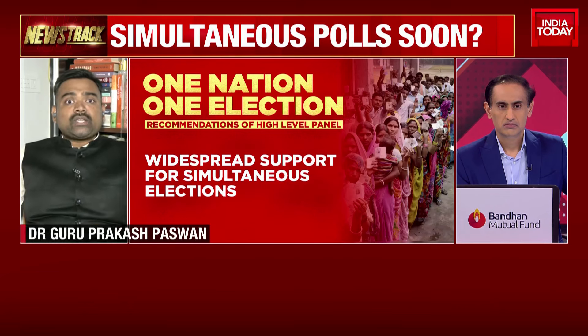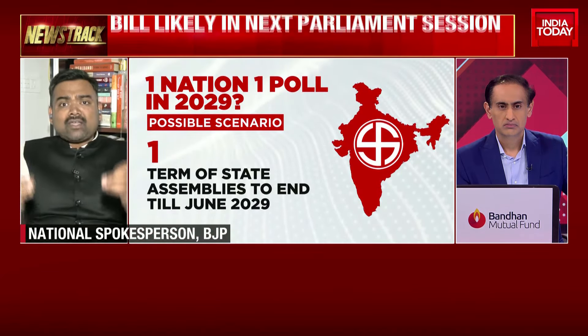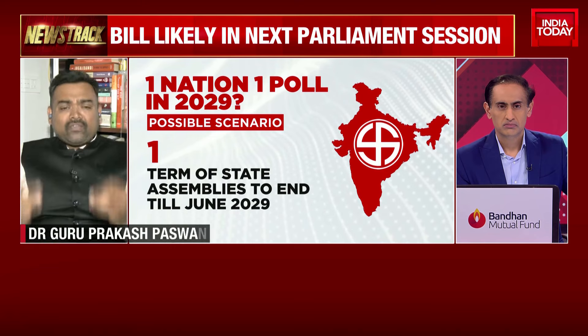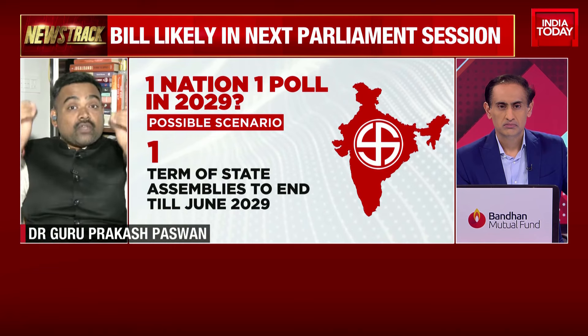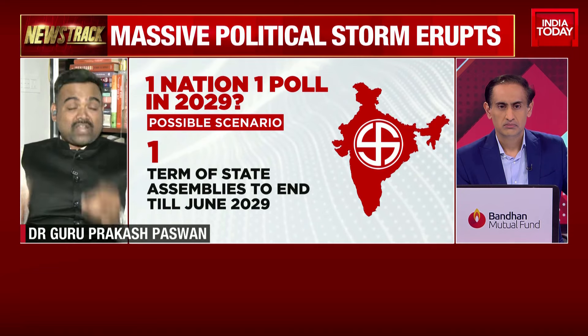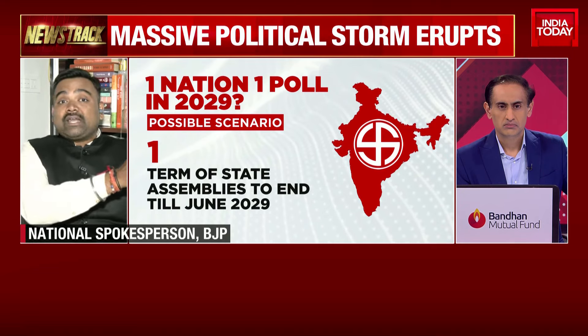It is foolish to suggest that if we are not able to pull off anything today, we won't be able to five years down the line. People used to say 370 abrogation will not happen — but it did. We eliminated left-wing extremism. Similarly, if we cannot do four elections today because of security concerns, five years down the line we will definitely be in a position to conduct one nation, one election.